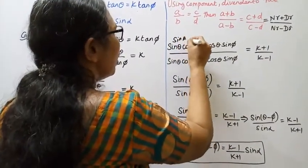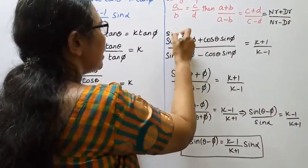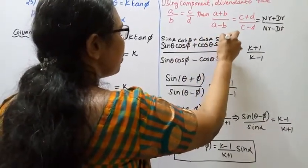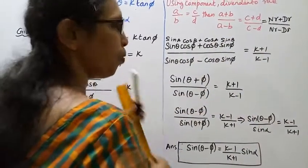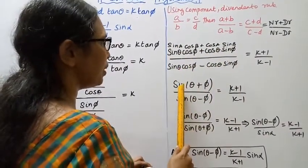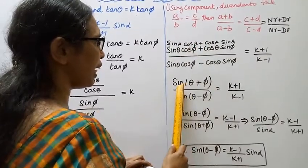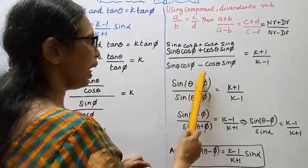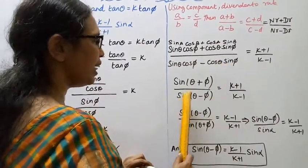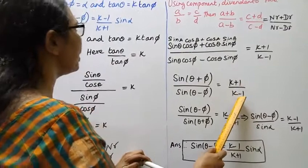Using the sin addition formula: sin a cos b plus cos a sin b equals sin(a plus b). Here a equals theta and b equals pi, so the numerator becomes sin(theta plus pi). The denominator sin theta cos pi minus cos theta sin pi equals sin(theta minus pi). Therefore sin(theta plus pi) by sin(theta minus pi) equal to k plus 1 by k minus 1.